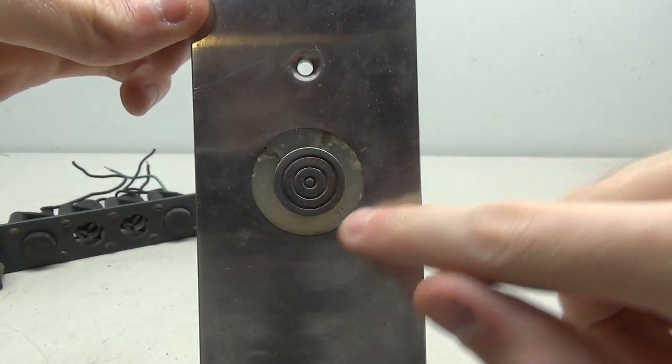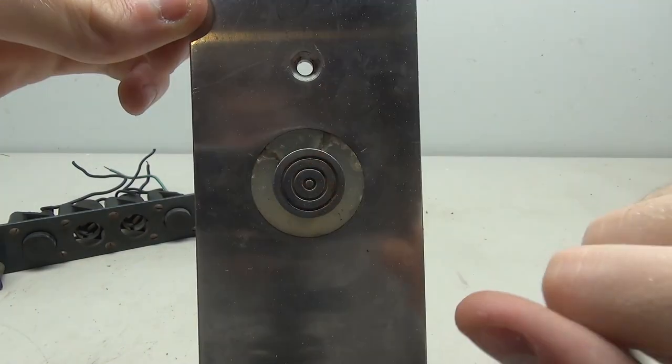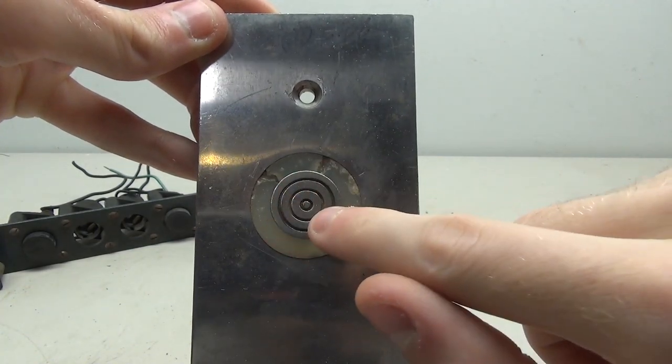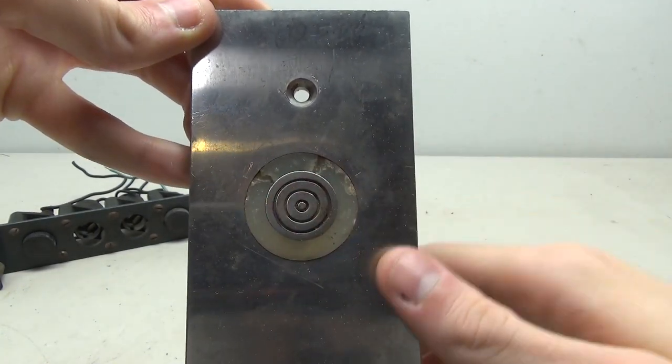So instead of there being the triangle light, there's the circle. And then likewise, instead of a triangle button, it's a circle. And it still has the lines on it. So instead of the lines going across, there are lines in a circle.